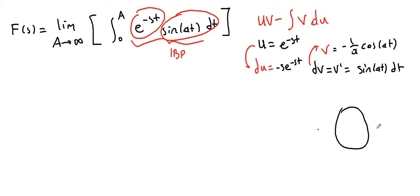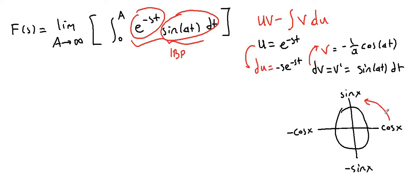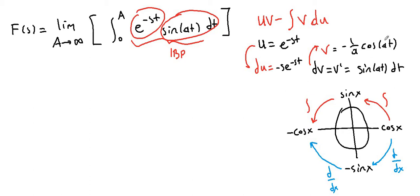Here is a practical unit circle you can use to find integrals and derivatives of trigonometric functions. Cosine x is in the positive direction, negative cosine, positive sine, and negative sine directions. Going counterclockwise gives you the antiderivative of the trigonometric functions, and going clockwise gives you the derivatives. So the integral of positive sine of at, going one step counterclockwise, is negative cosine of at times 1 over a.